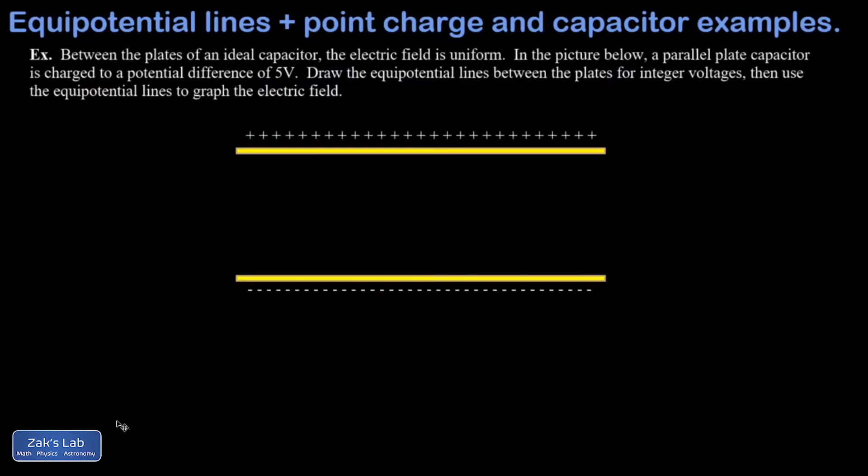All right, let's look at one more example that helps us think about the relationship between equipotential lines and electric field and also these arguments about the work done by the electric force. We're told in this example that between the plates of an ideal capacitor, the electric field is uniform. That means it always has the same magnitude in the same direction. We're also told that this capacitor has been charged to a potential difference of 5 volts. So the high voltage is where all the plus charges are gathered and the low voltage is where the minus charges are gathered.